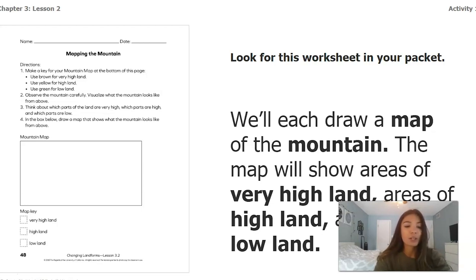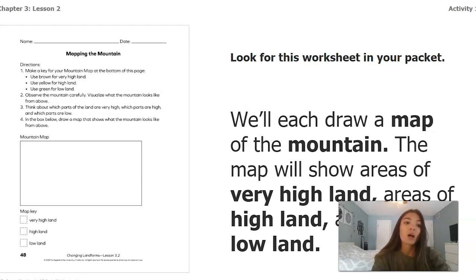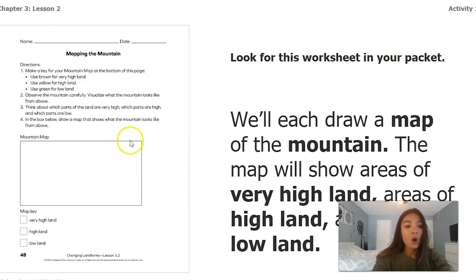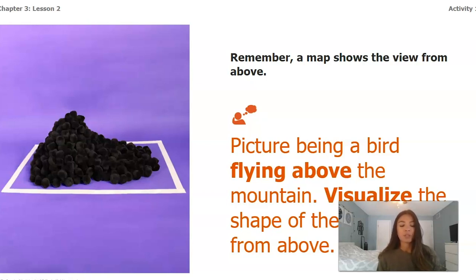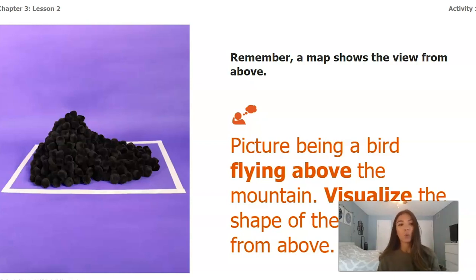After we color in our key, we're going to look carefully at the picture of the mountain and visualize what it might look like from above — a bird's eye view. We're going to think about which parts of the land are very high, which parts are high, and which parts are low. Then in the box below, we're going to draw a map showing what the mountain looks like from above. Picture being a bird flying above the mountain and visualize its shape from that perspective.